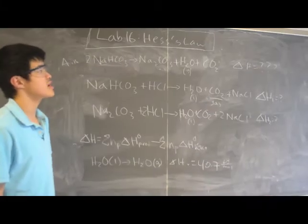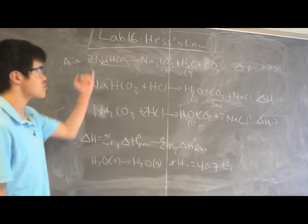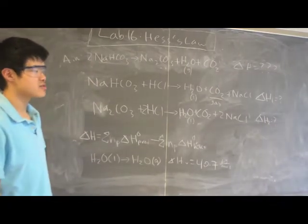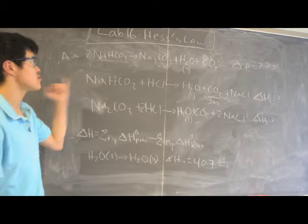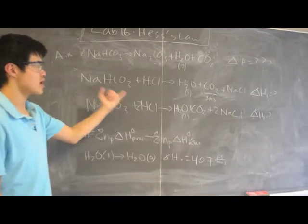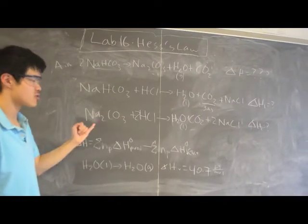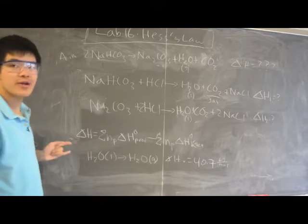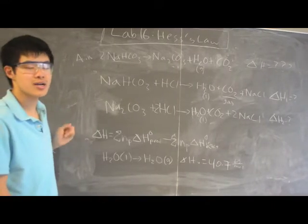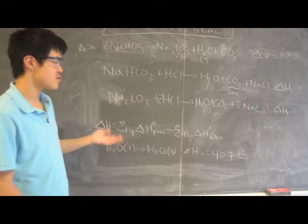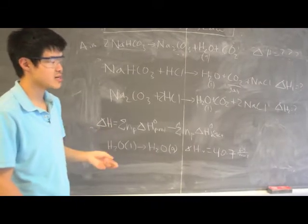So for Lab 16 Hess's Law, we'll be finding the delta H for the decomposition of sodium bicarbonate using two experiments we found with delta H values. One is the reaction of sodium bicarbonate with hydrochloric acid and one with sodium carbonate with hydrochloric acid. Afterwards we'll compare that to the actual accepted value using the formula delta H equals the sum of the delta H of products minus the delta H of the reactants.